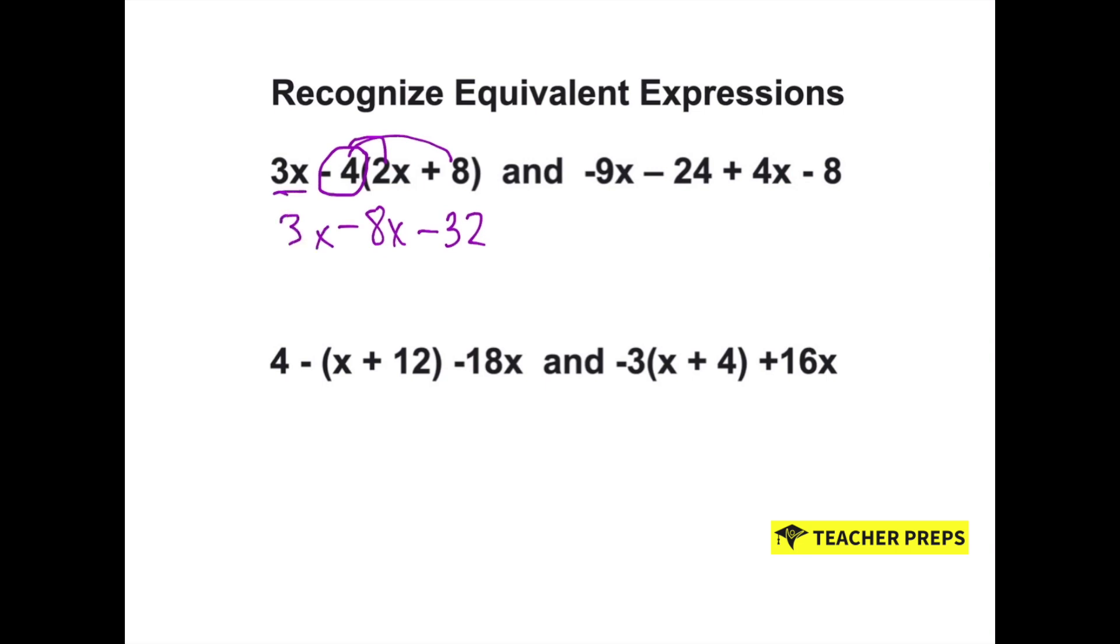If you notice, we do have like terms. We have 3x and a negative 8x. 3 minus 8 is negative 5. So we have negative 5x minus 32, and the side on the left is in its simplest form.